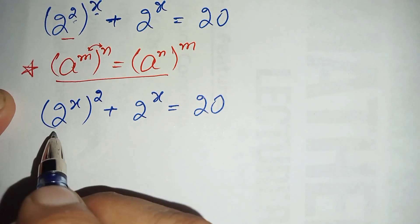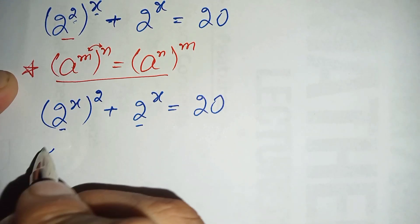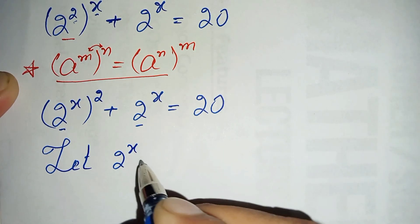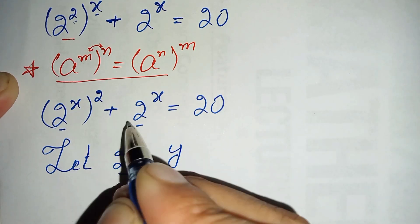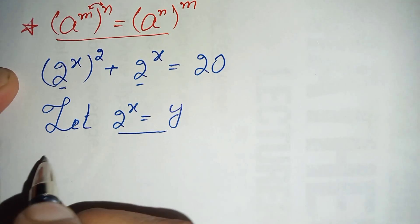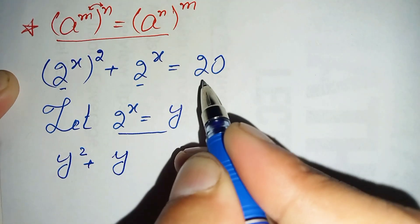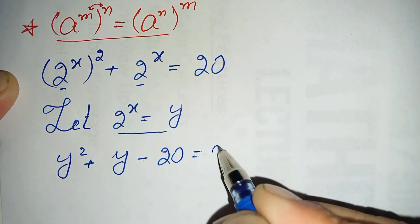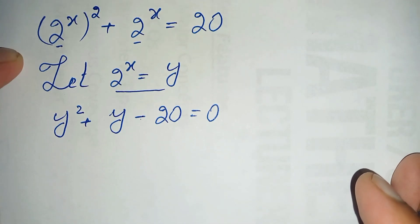Now looking at the left-hand side, both terms contain 2 raised to power x, so here we will make a substitution. Let us suppose 2 raised to power x is equal to another variable y. So next we replace 2 raised to power x in this equation with y. This equation becomes y squared plus y, and moving 20 to the left-hand side gives minus 20, equal to 0.